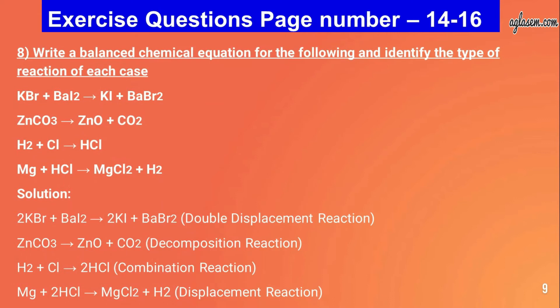Question number eight: write a balanced chemical equation and identify the type of reaction for each case. The reactions are: KBr + BaI₂ → KI + BaBr₂; ZnCO₃ → ZnO + CO₂; H₂ + Cl₂ → HCl; Mg + HCl → MgCl₂ + H₂.